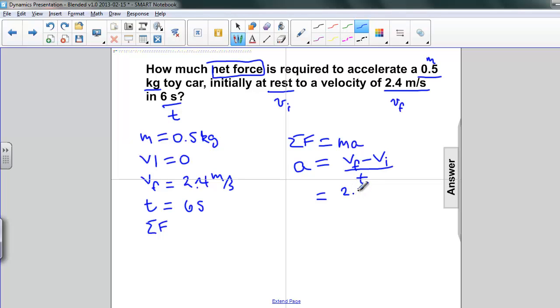We're going to subtract from that VI, but VI is 0, so we'll skip that. And we're going to divide by the amount of time it takes, which is 6 seconds. So our answer, the acceleration is equal to 0.4 meters per second per second, or meters per second squared.